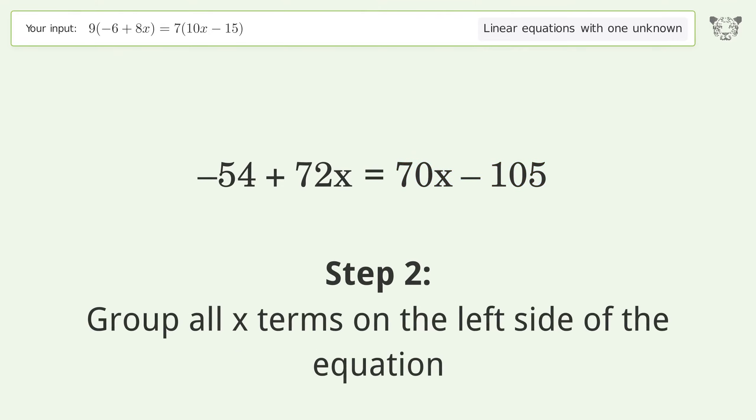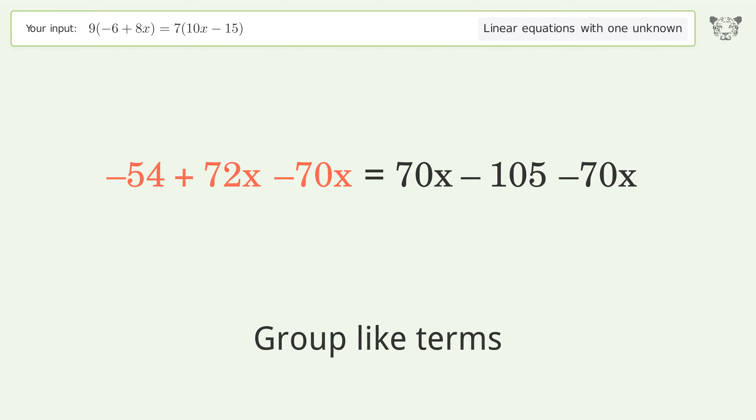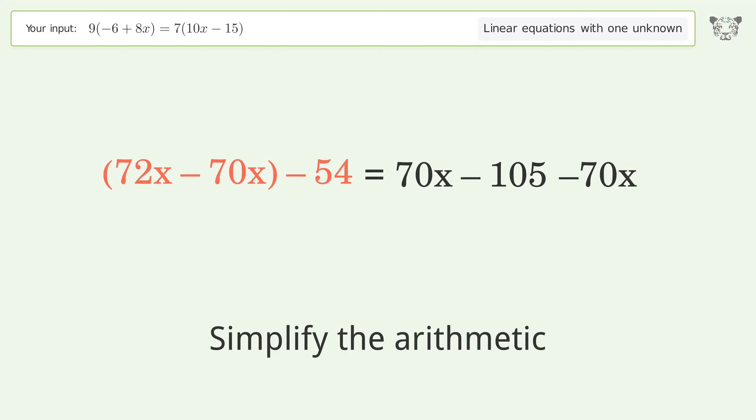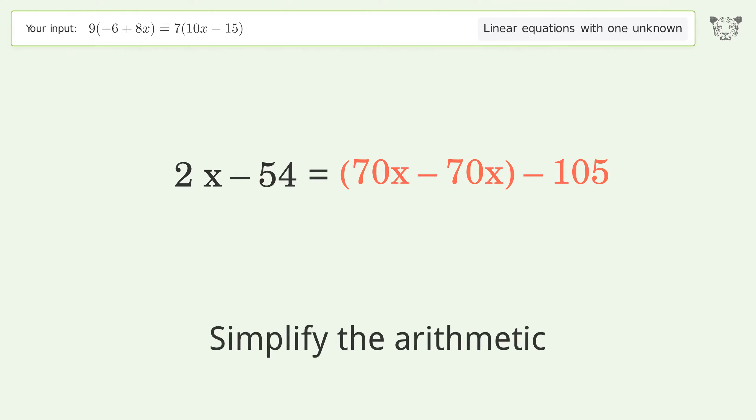Group all x terms on the left side of the equation. Subtract 70x from both sides. Group like terms. Simplify the arithmetic. Group like terms. Simplify the arithmetic.